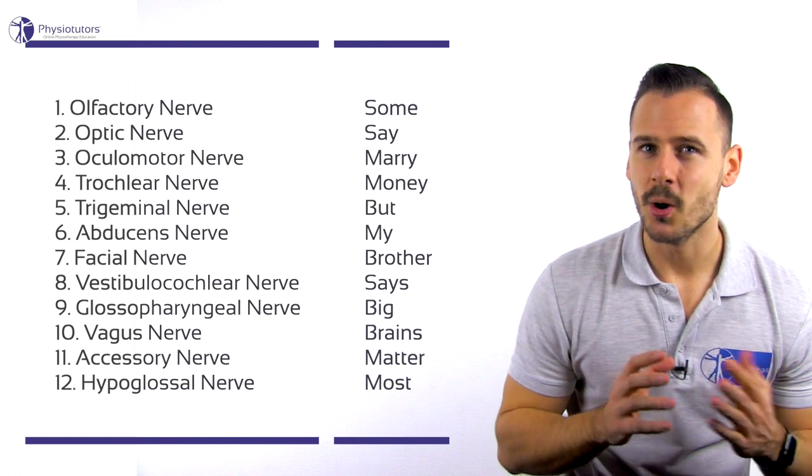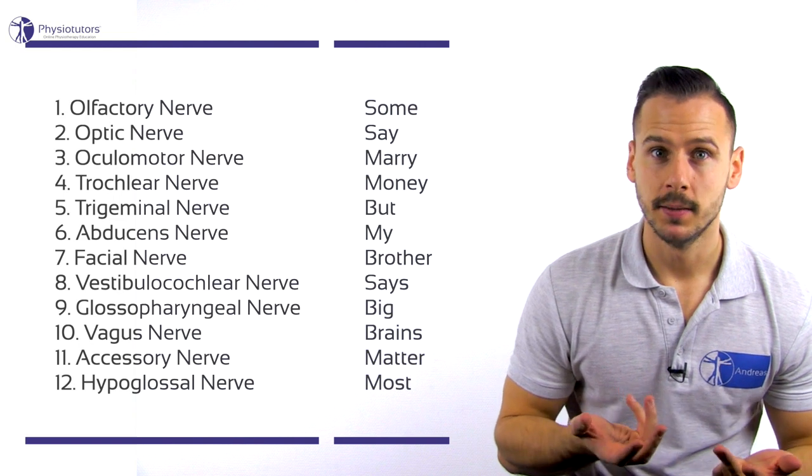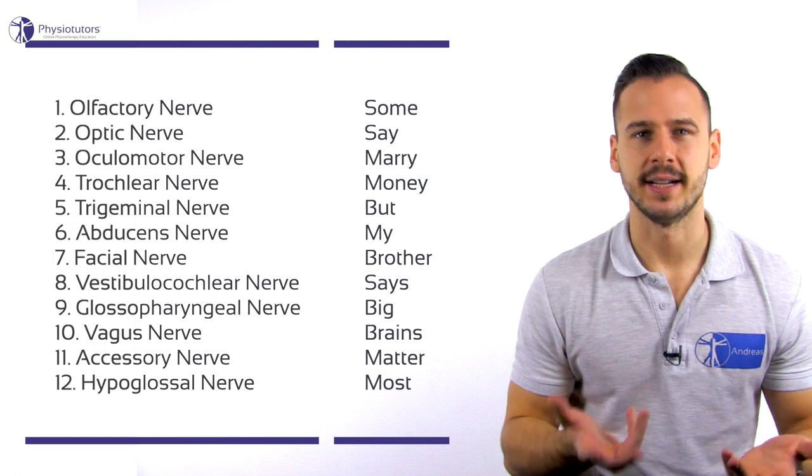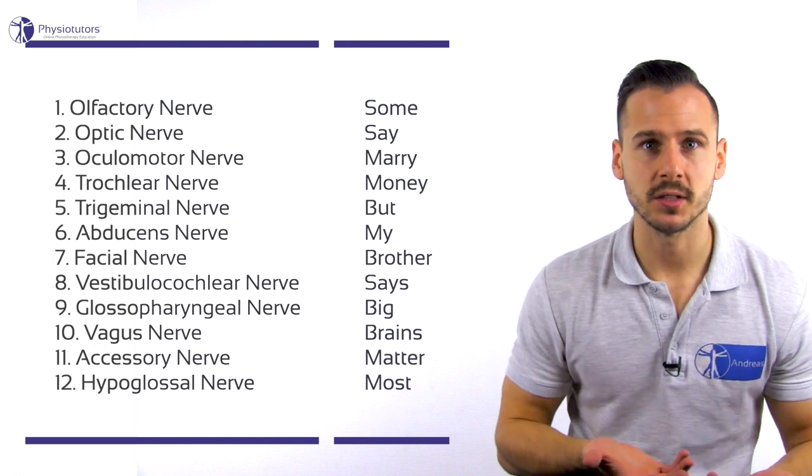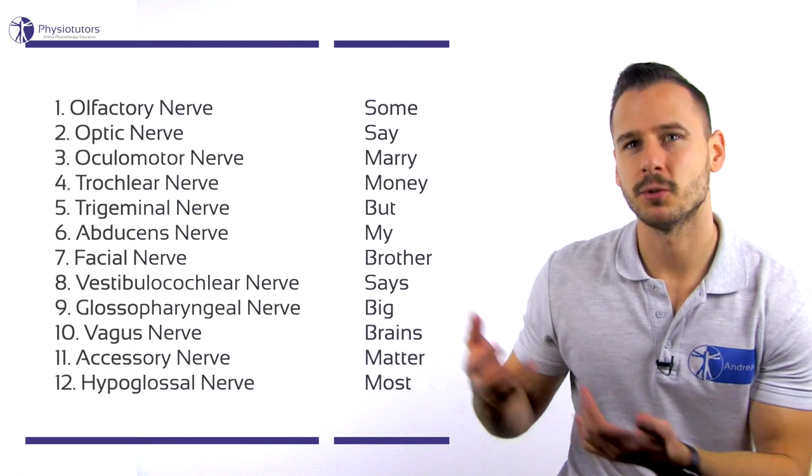As you can see, the sentence only contains words that start with either S, M or B. So the first letter of each word corresponds to the function of the respective cranial nerve, namely S for sensory, M for motor and B for both sensory and motor.